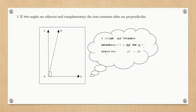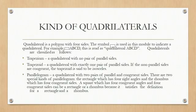Theorem 4: If angle CAR is complementary to angle RAE, then AC and AE are perpendicular.